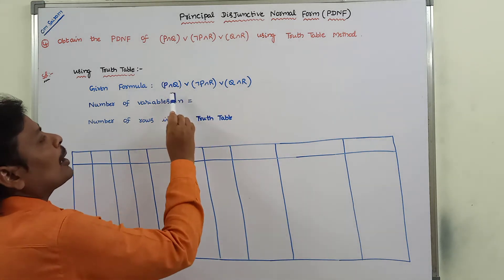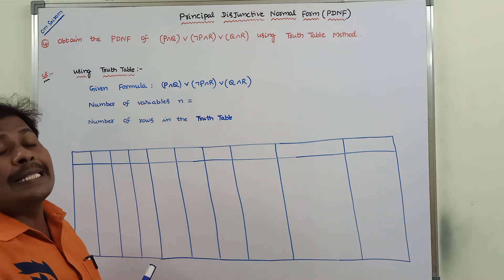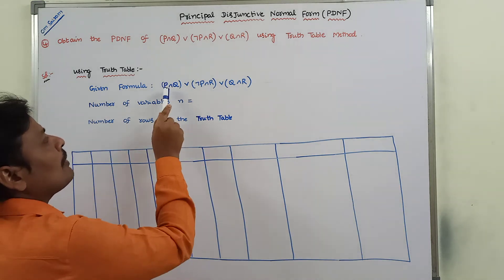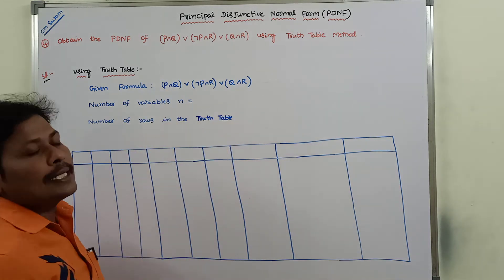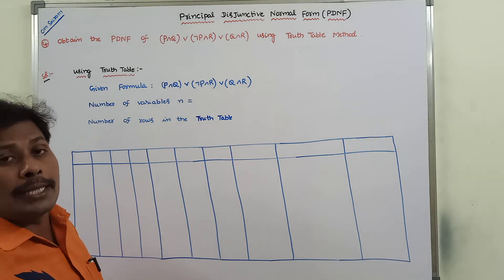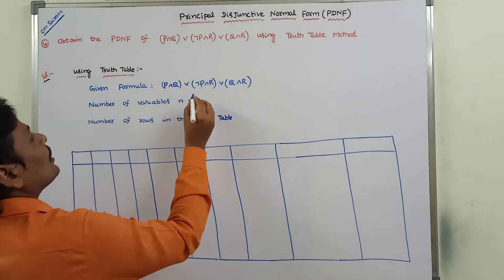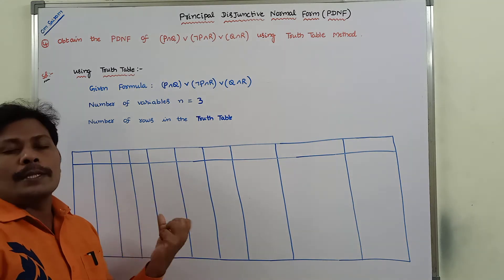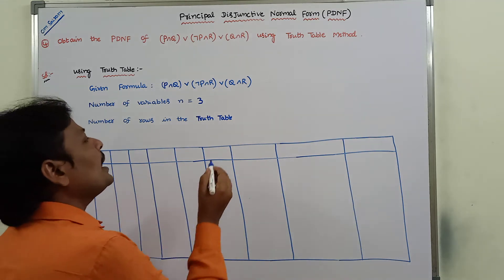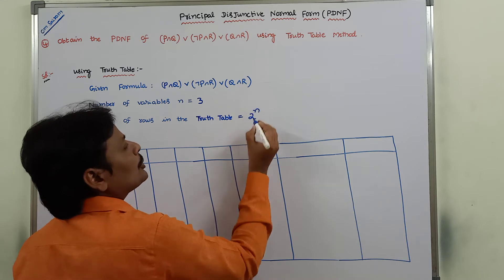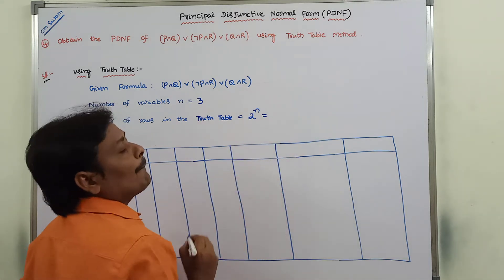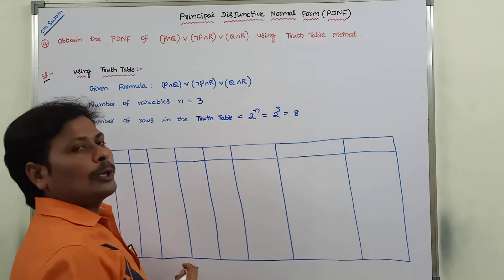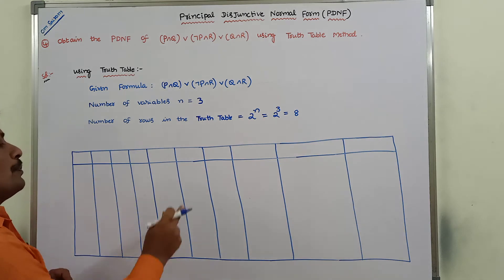First of all we have to observe how many variables are there in the given formula. So here there are three variables: P, Q, and R. Therefore the number of variables N is equal to 3. The number of rows in the truth table is given by the formula 2 power N, where N is the number of variables. So that is 2 power 3, which equals 8 rows.